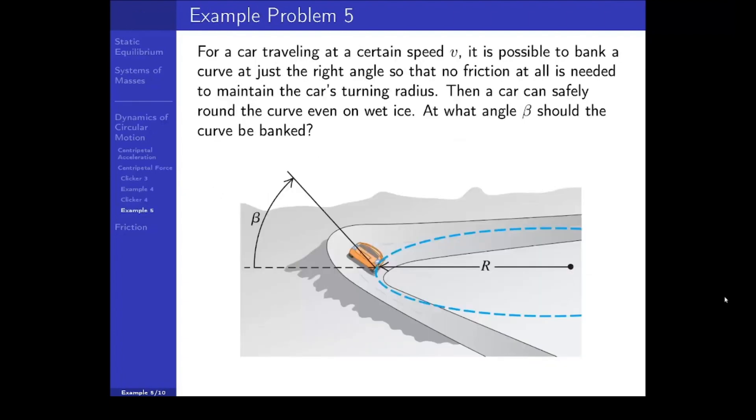Okay. Now let's try another example problem. This is a bit more challenging of a problem than the previous one. For a car traveling at a certain speed v, it is possible to bank a curve at just the right angle so that no friction at all is needed to maintain the car's turning radius. Then a car can safely round the curve even on wet ice. At what angle beta should the curve be banked?